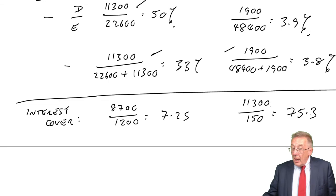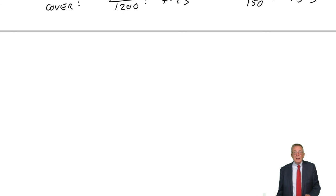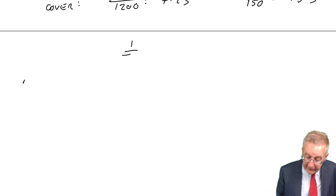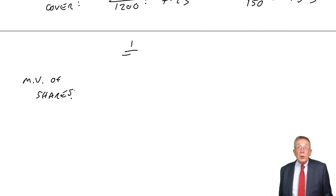The fundamental objective is to maximize shareholders' wealth. We maximize shareholders' wealth by increasing the share price. Well, we can calculate the market value of the shares. The PE ratio is the market value of the share divided by the earnings per share, so the market value is the PE ratio times the earnings per share.